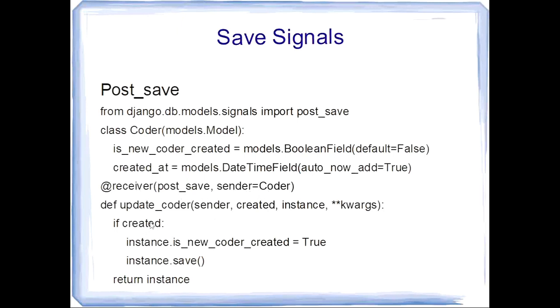The update_coder method will check if the instance is created, then it is saved to the database and returns that instance value. This signal is activated each time the model instance is saved.